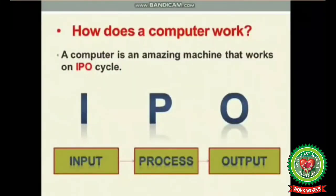Next is how does a computer work. A computer is an amazing machine that works on the IPO cycle, which you have done in your previous classes. I stands for input, P stands for process, and O stands for output.